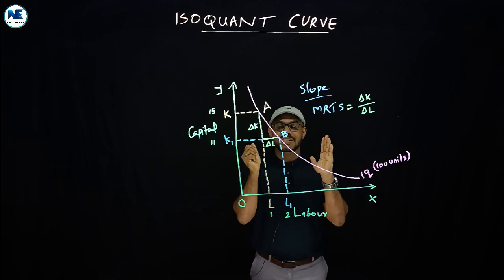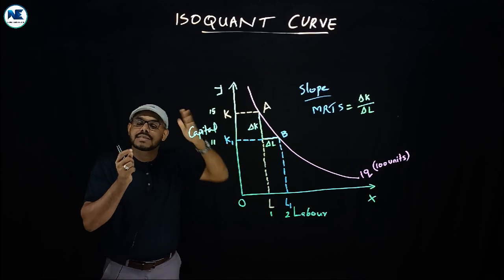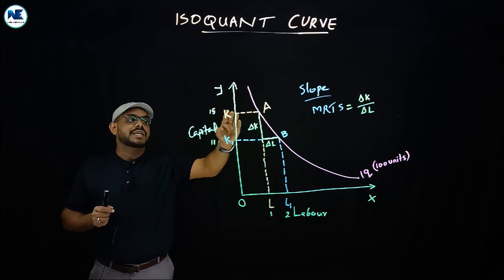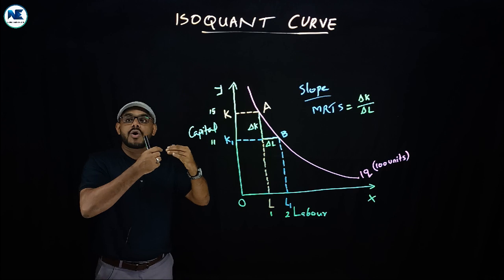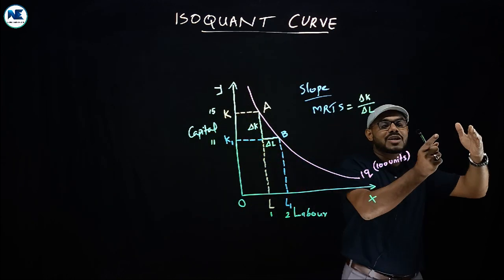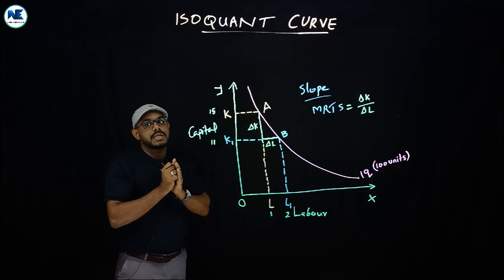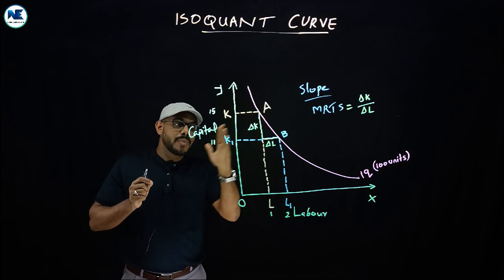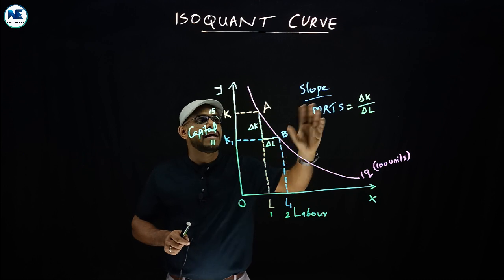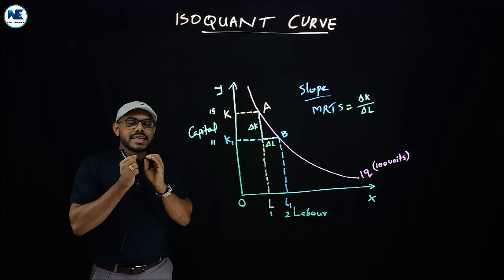To summarize the comparison: isoquants represent producer's equilibrium from the theory of production, dealing with output and quantity. Indifference curves represent consumer's equilibrium from the theory of consumption, dealing with utility and satisfaction. The isoquant curve is downward sloping from left to right, and its slope is the marginal rate of technical substitution.